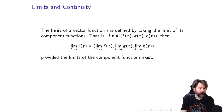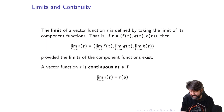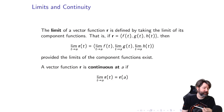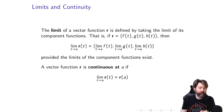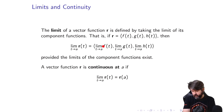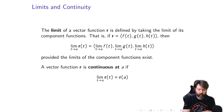We can also define continuity for vector functions. A vector function R is continuous at A as long as the limit as T approaches A of R of T equals R of A — the same definition we had for functions in Calculus, but now for vector functions. This boils down to: a vector function R is continuous at A if all of its component functions are continuous at A.